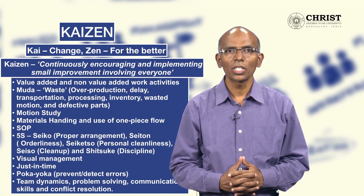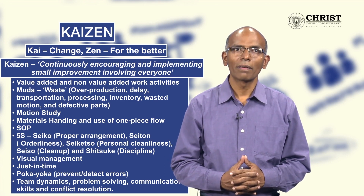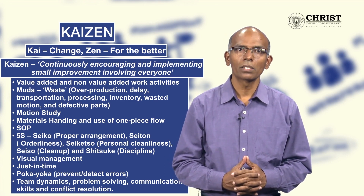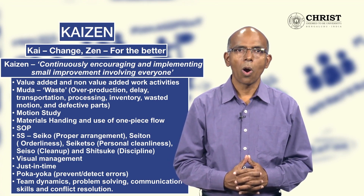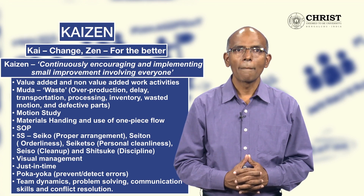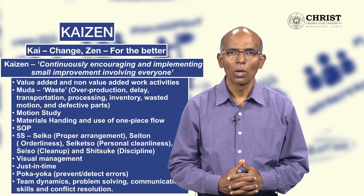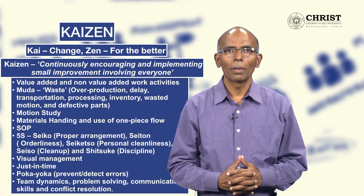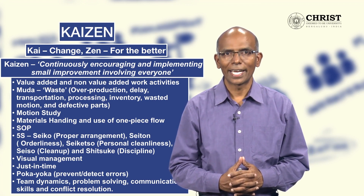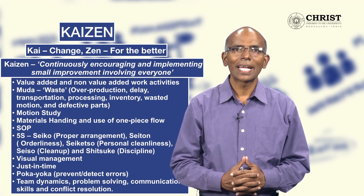Kaizen includes Muda — waste reduction; 5S — based on Japanese words for proper arrangement, orderliness, personal cleanliness, clean up, and discipline; poka-yoke — to prevent and detect errors; and conflict resolution, among others.